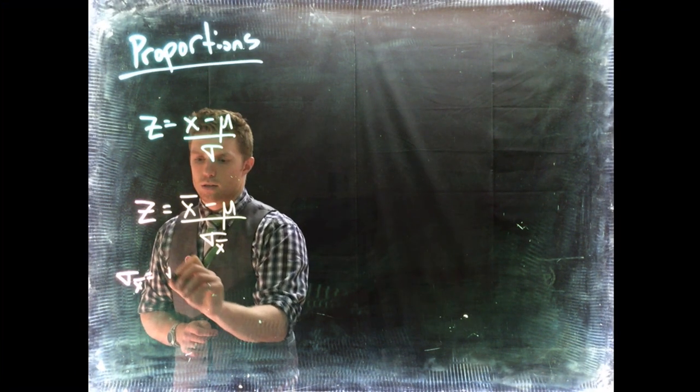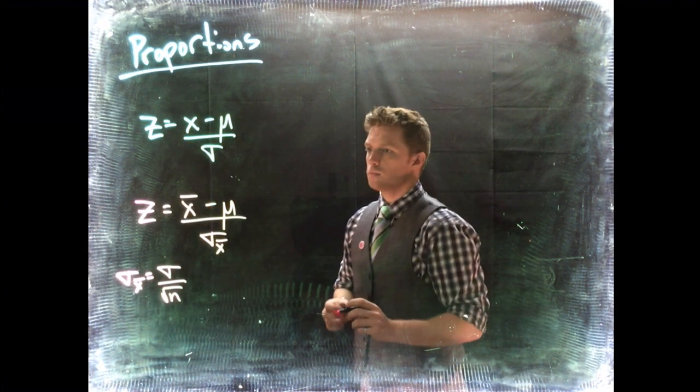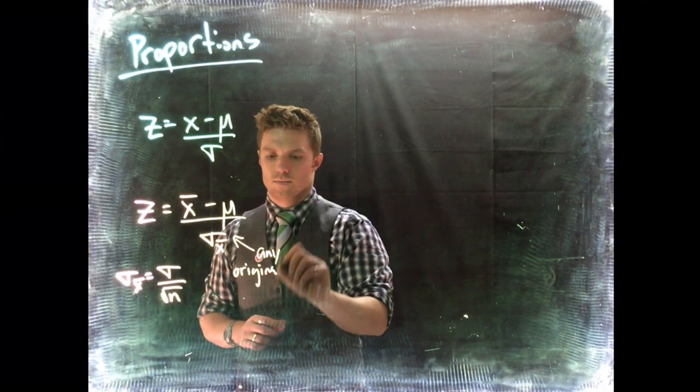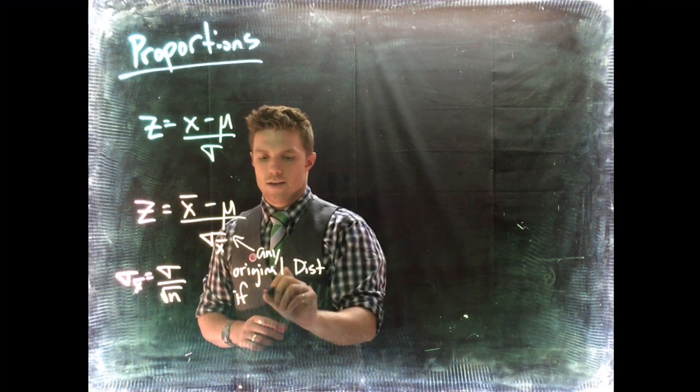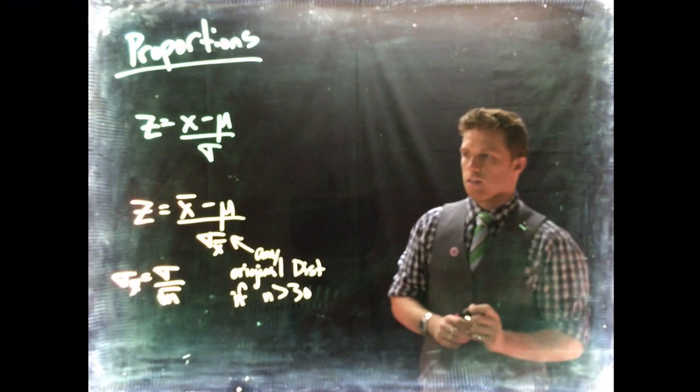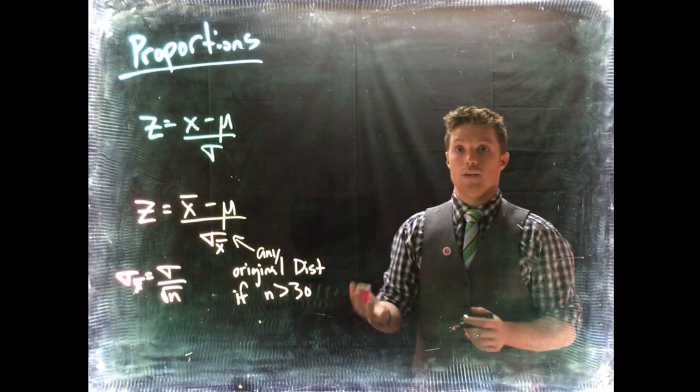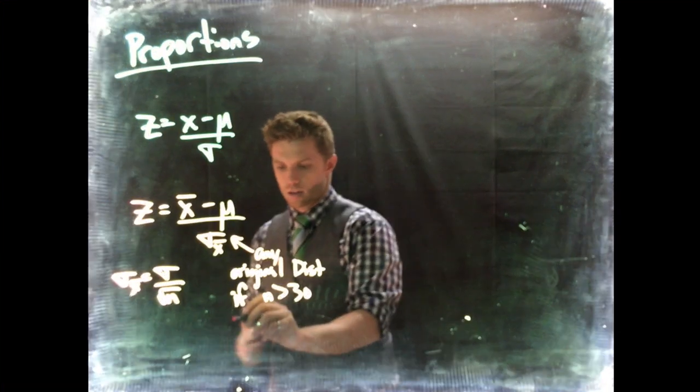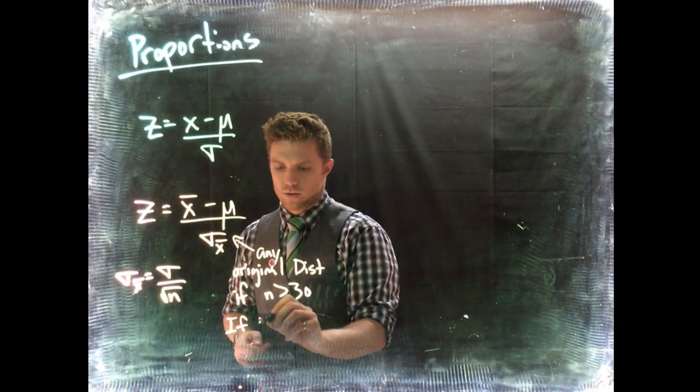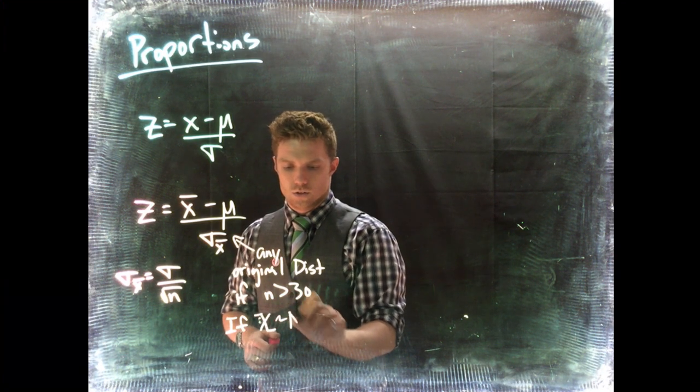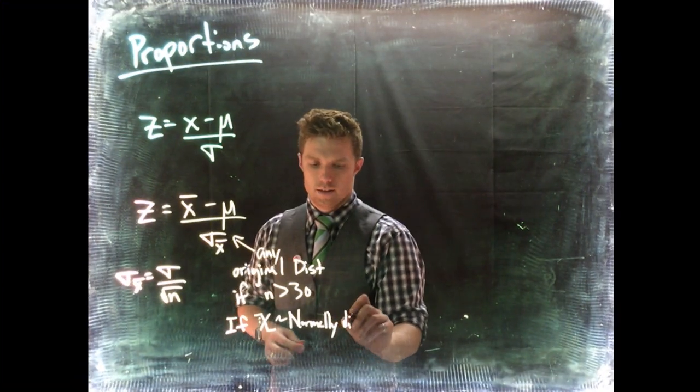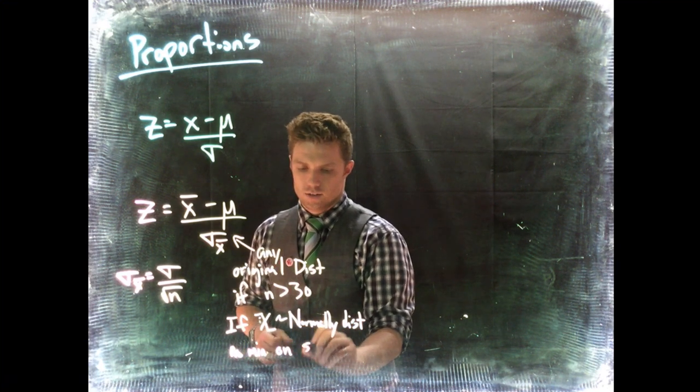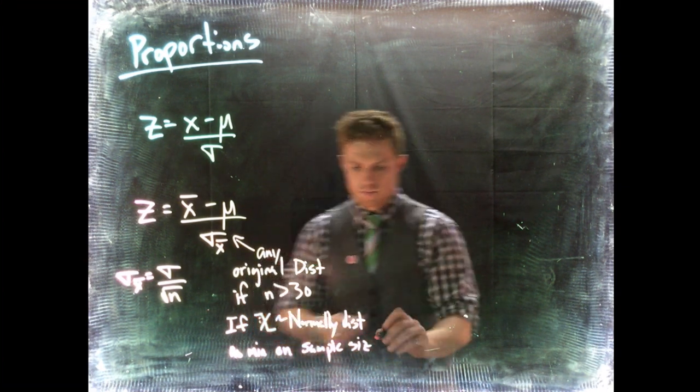We calculate that standard deviation by doing sigma X-bar equals sigma divided by the square root of n. This can be used for any original distribution if n is bigger than 30, or if the original distribution is normally distributed, we can have any sample size.